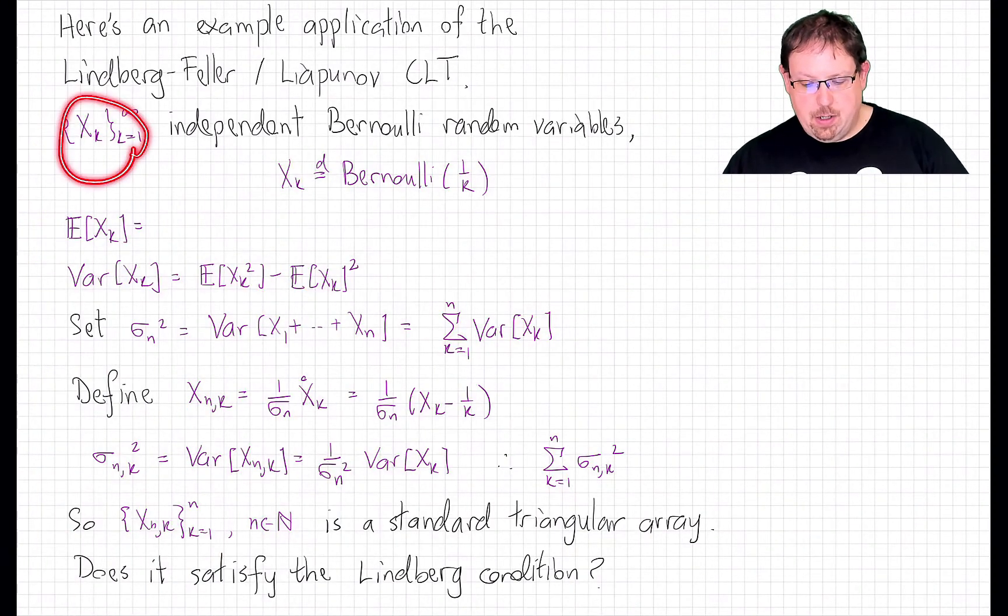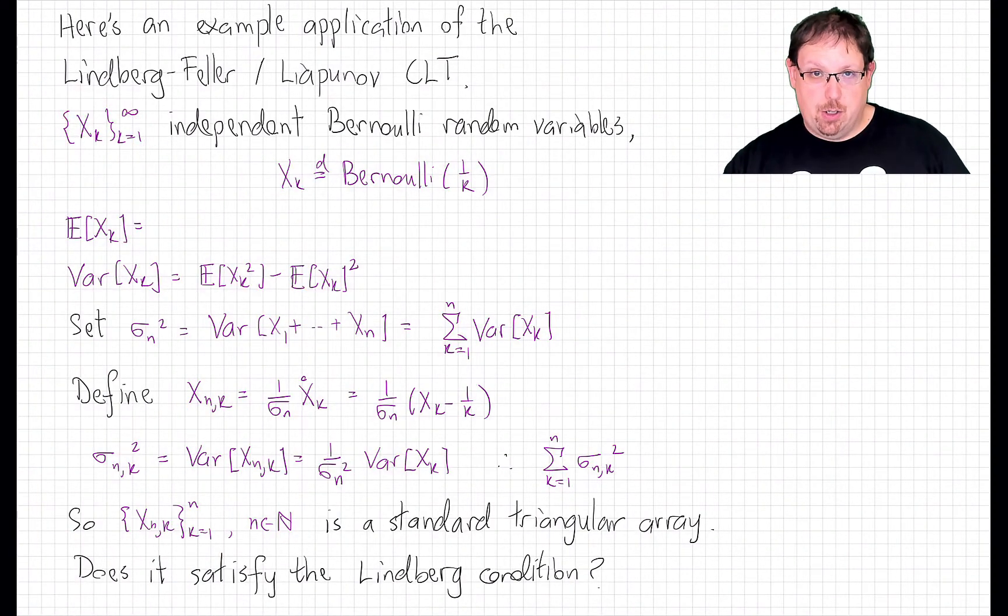We're going to look at a special example right now where this proves something really interesting. Consider a sequence of independent Bernoulli random variables, but not all identically distributed. In fact, we want X_k to be Bernoulli with probability 1 over k.